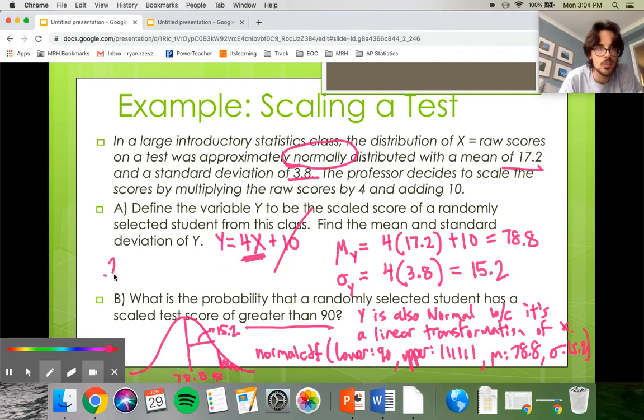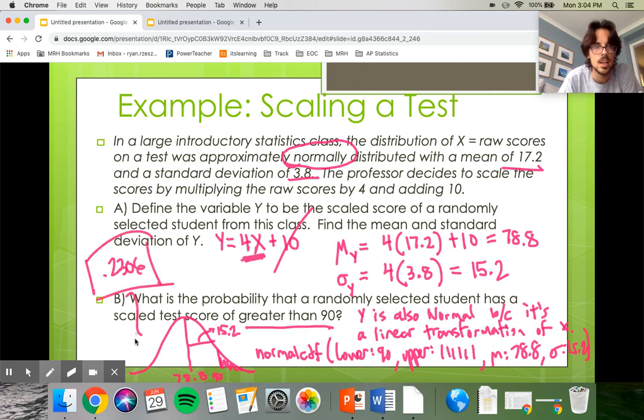And again, I don't have space or time to do it in this video. But if this was like a quiz question or something like that, just make sure you restate the problem in context. The probability that a randomly selected scaled score will be greater than 90 is approximately 23%. So that is how you transform a linear, do linear transformations on a random variable. The next video, we're going to talk about combining random variables and the rules for that are different.